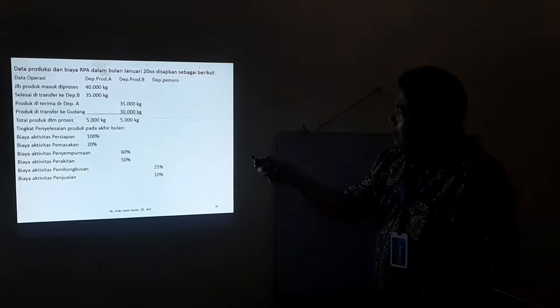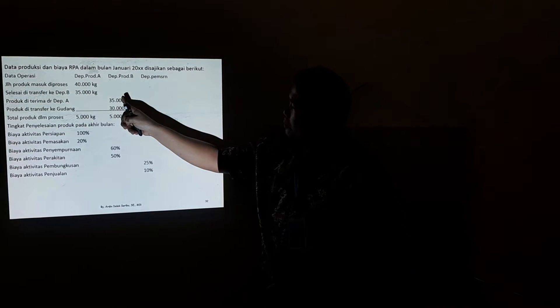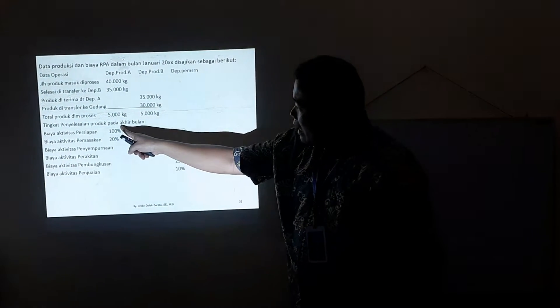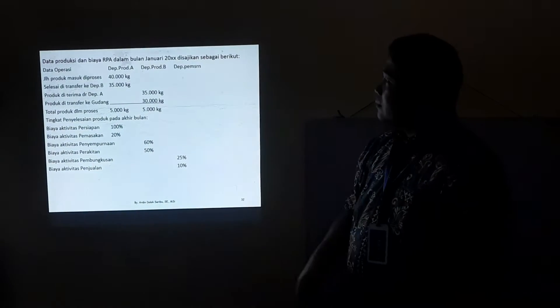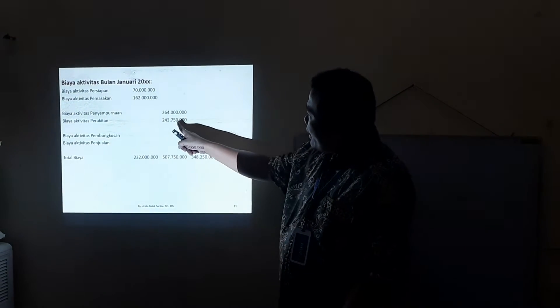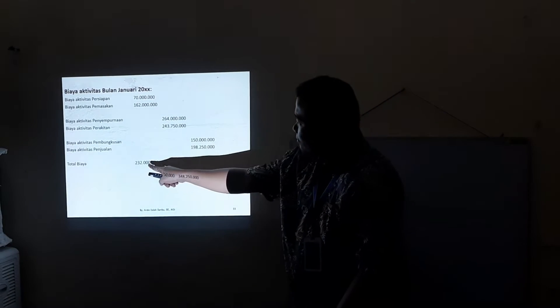Berikut adalah data kuantitas produksi. Yang masuk di Departemen A adalah 40.000, yang selesai 35.000, dan sisa 5.000. Yang 35.000 ditransfer ke Departemen B. Departemen B menerima 35.000, menyelesaikan 30.000, dan sisa 5.000. Data biaya untuk Departemen A mencakup aktivitas persiapan, pemasakan, penyempurnaan, dan pembungkusan/pemasaran.